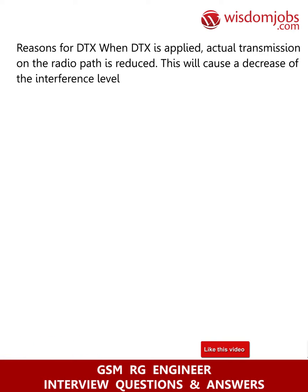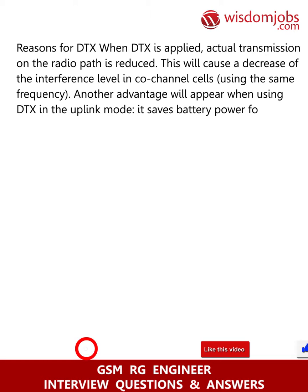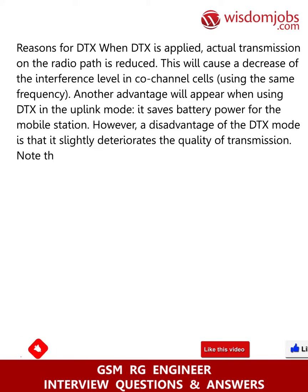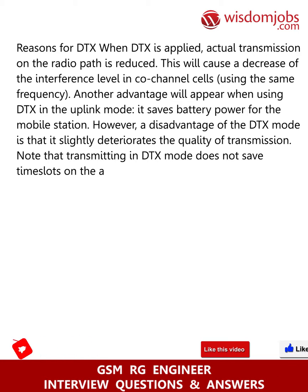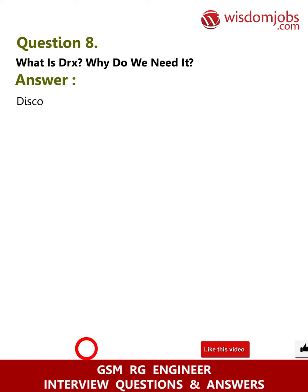When DTX is applied, actual transmission on the radio path is reduced, causing a decrease in interference level in co-channel cells using the same frequency. Another advantage when using DTX in uplink mode is that it saves battery power for the mobile station. However, a disadvantage is that DTX slightly deteriorates the quality of transmission. Note that transmitting in DTX mode does not save time slots on the air interface.